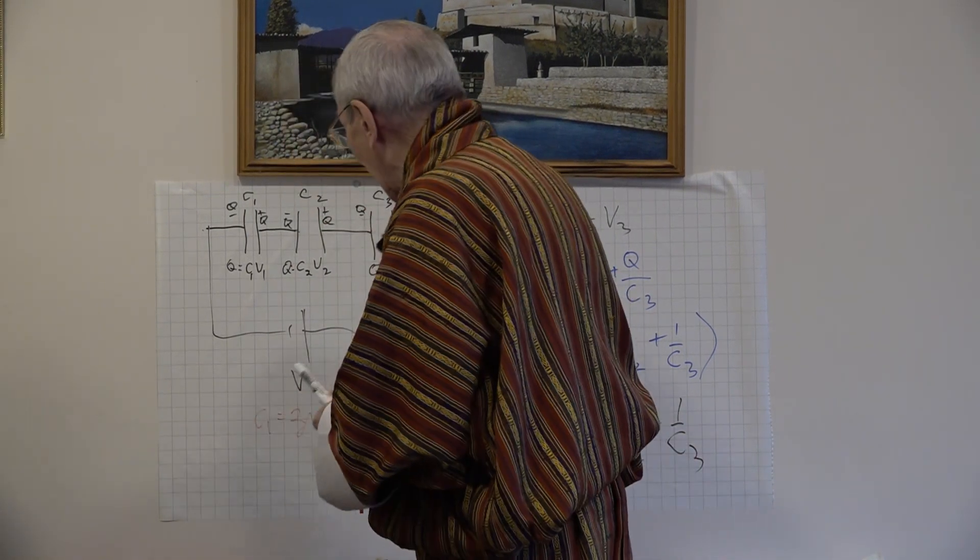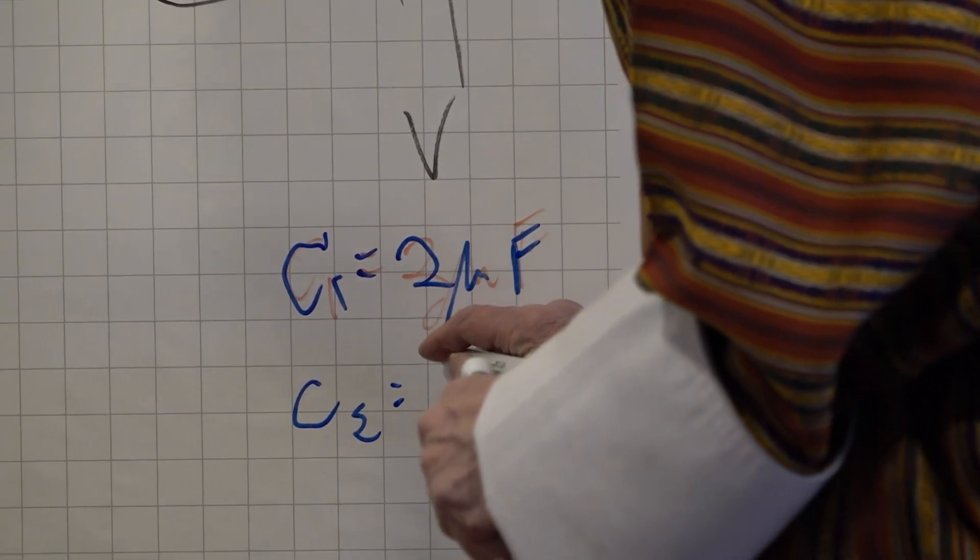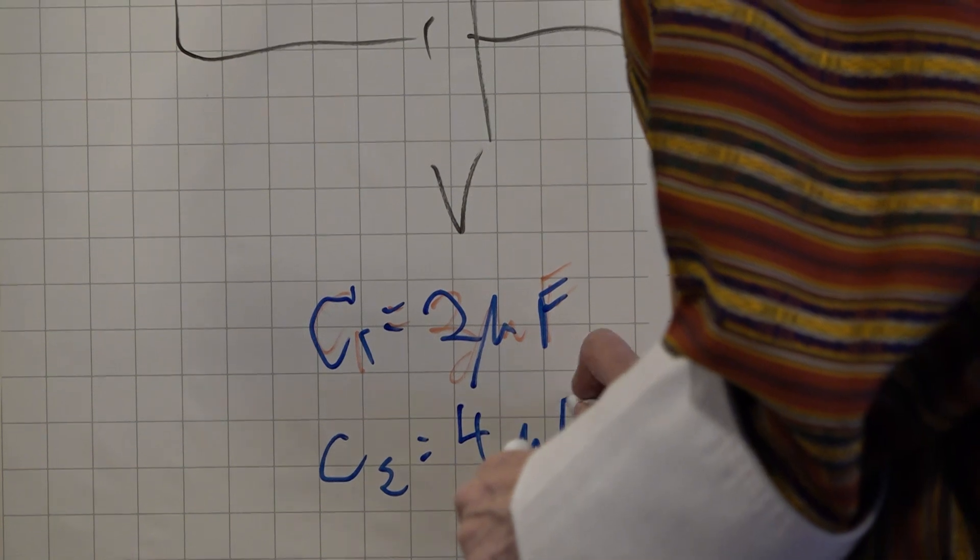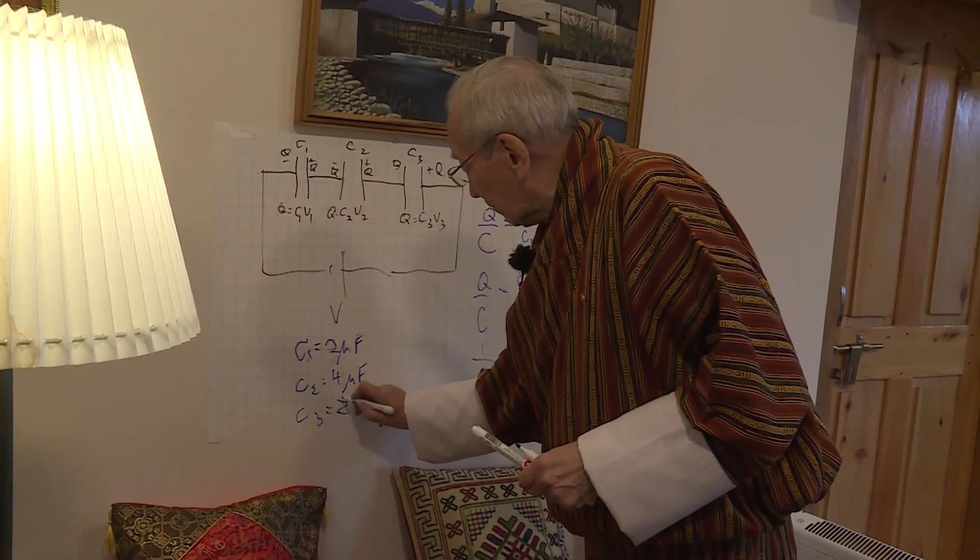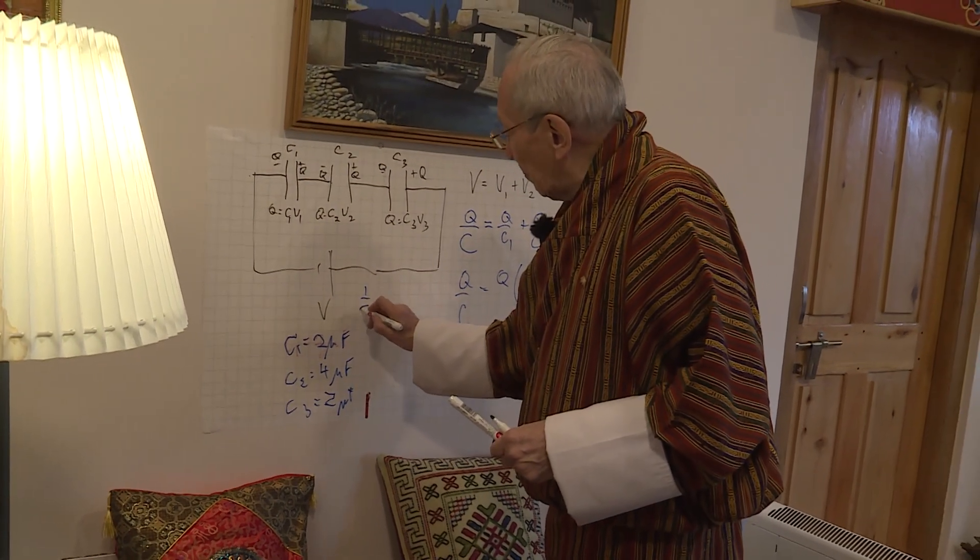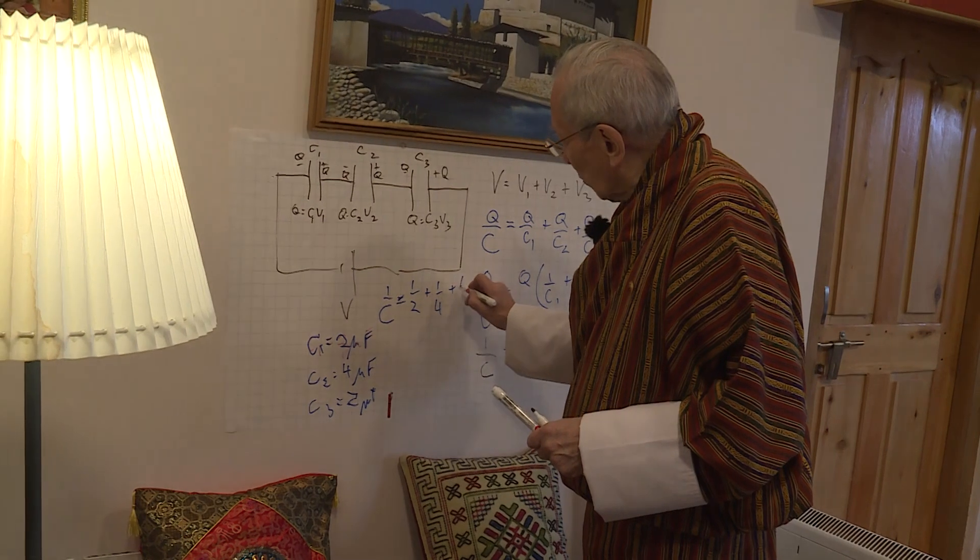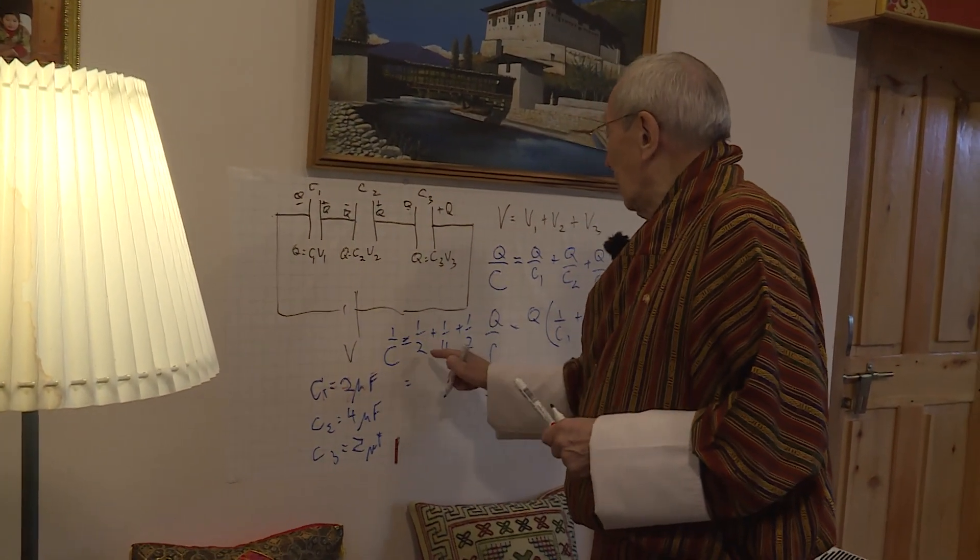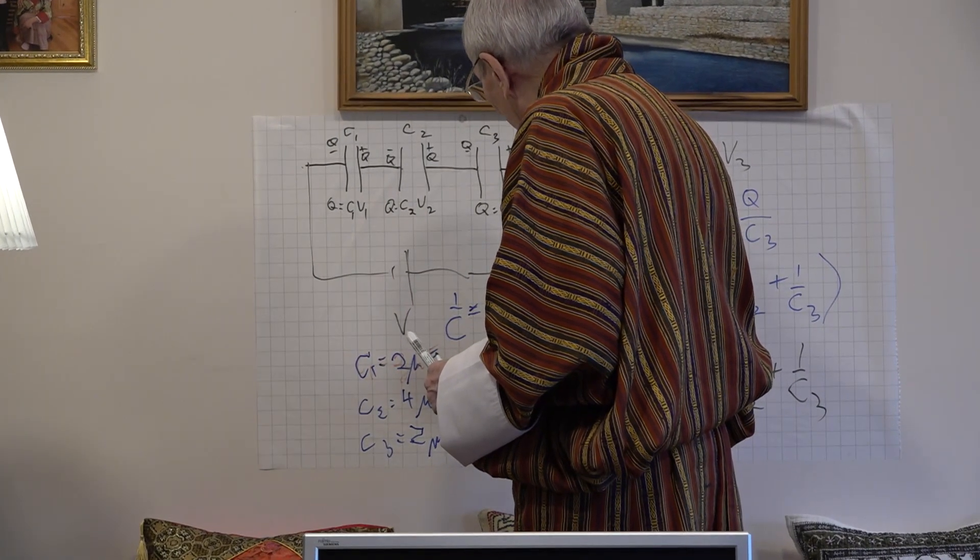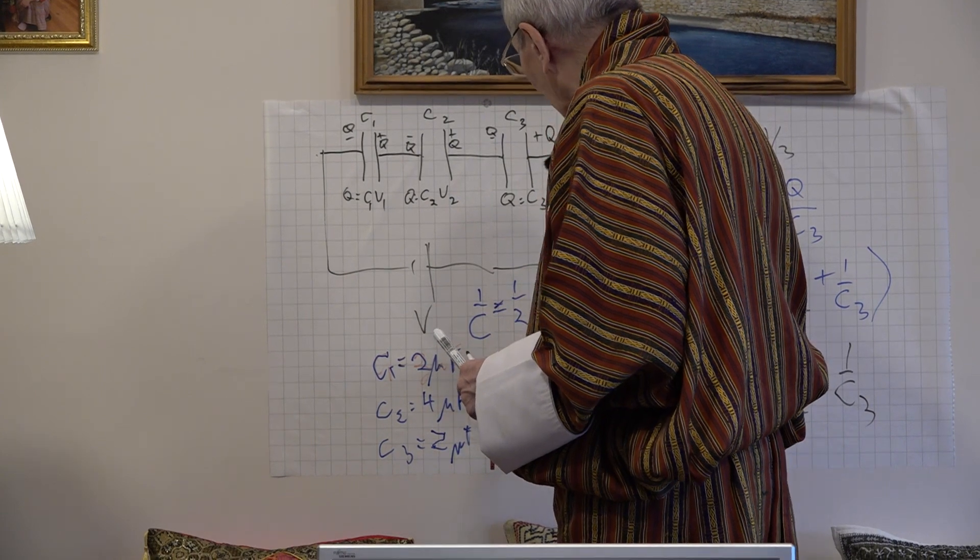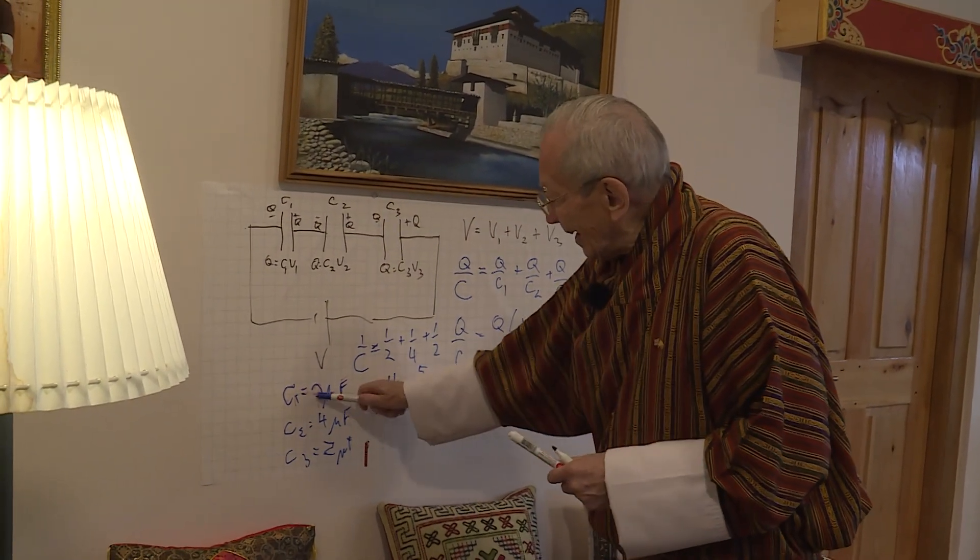If you think about values, let's say C1 is 2 microfarads. I'll do it in blue. C1 equals 2 microfarads. C2 equals, what shall we say? 4 microfarads. And C3 equals another one of 2 microfarads. So, 1 over the big capacitor that will replace all of them will equal 1 over 2 plus 1 over 4 plus 1 over 2, which is equal to a half plus half is 1 plus a quarter, so that's 1 and a quarter, which equals 5 over 4 microfarads. So, the big capacitor will equal 1 and a quarter microfarads. And you notice, it is smaller than any of the capacitors.